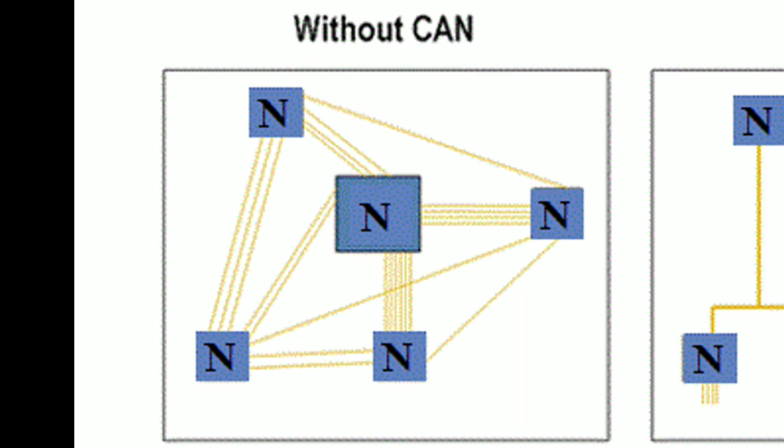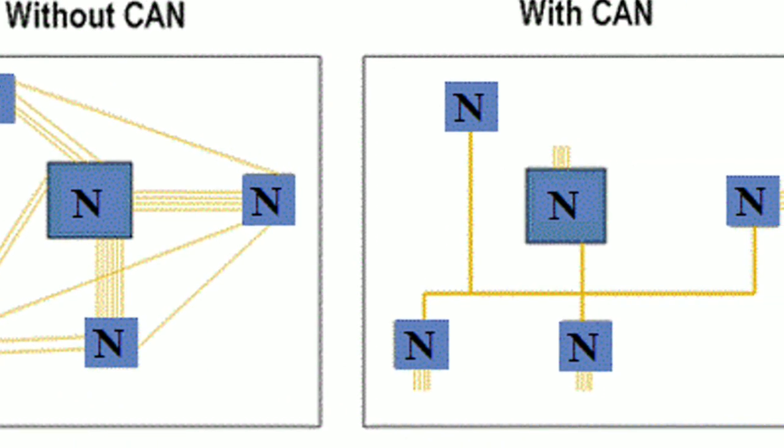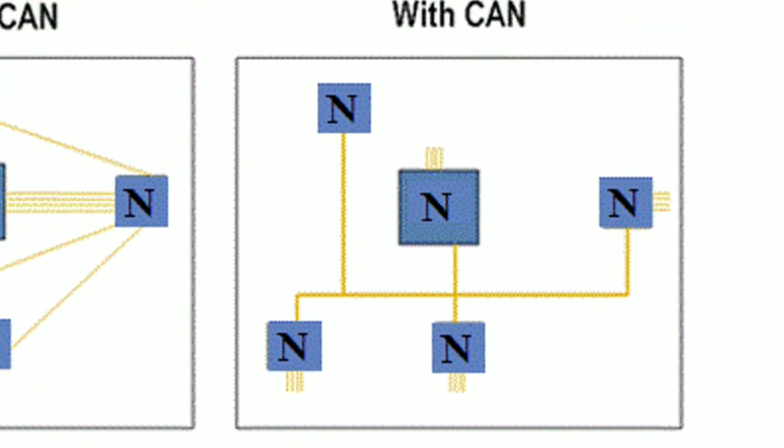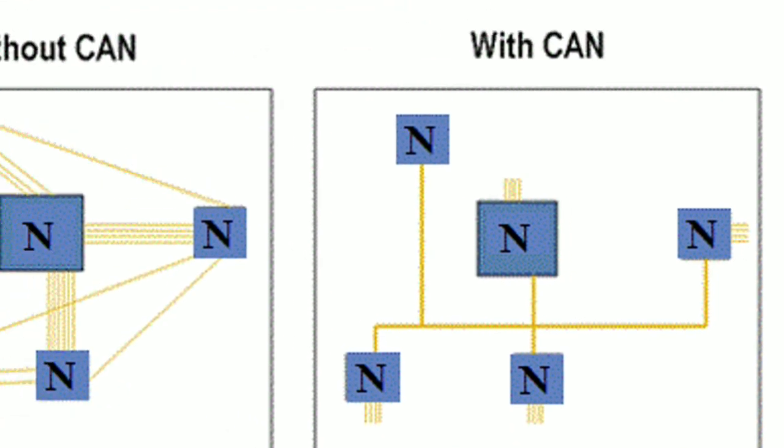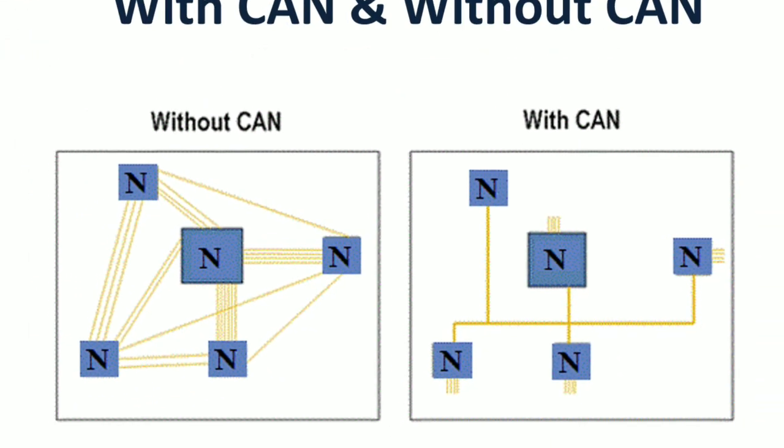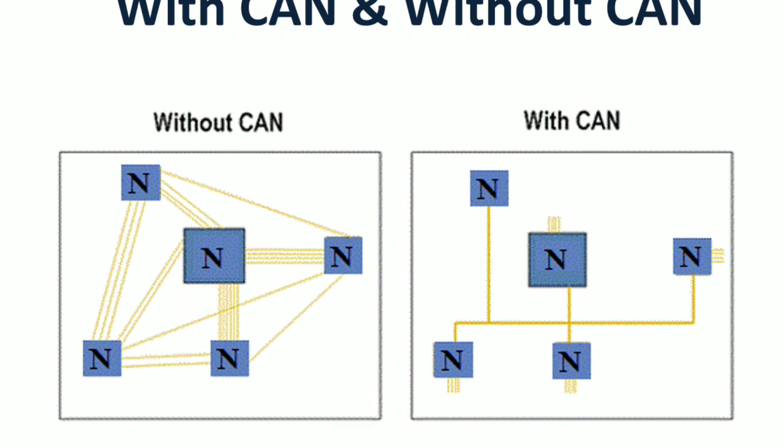But in CAN communication it is not like that. Some of the main advantages: it will generate error codes. By using the error code you can easily identify where the error is. So without CAN and with CAN, I guess you might have some idea.